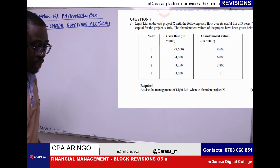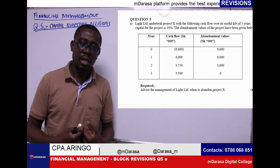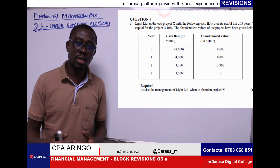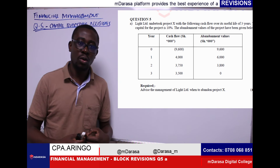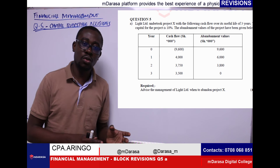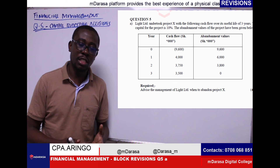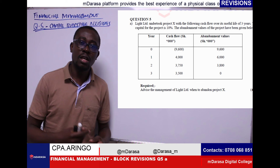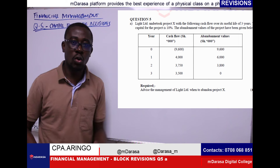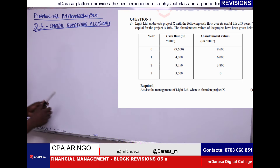The good examiner asked us to advise the management of Light Limited when to abandon Project X. It is a fact that we can always undertake a project, but it reaches a point where we see that it won't give us what we're expecting, so we decide to abandon the project even before its completion date. There's an amount you can recover on abandoning — this is referred to as the abandonment or casual value. When advising management on a capital budgeting decision, the best approach will always be the net present value.